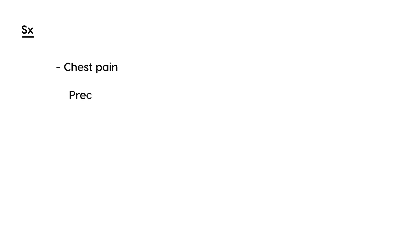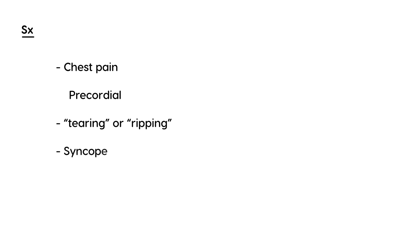These syndromes are always on the licensing exams, which is why I mention them. So if someone does have an aortic dissection, how would they present? They're definitely going to have chest pain, in particular in the precordial region. The way they describe it is really classic on a clinical vignette — tearing or ripping. They can also have syncope, and symptoms that resemble a stroke or an MI. It's a very serious presentation.